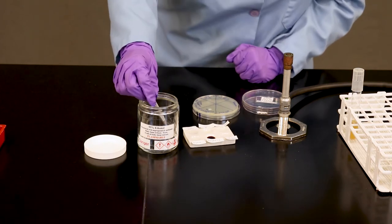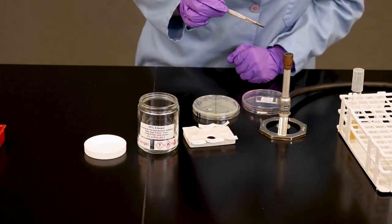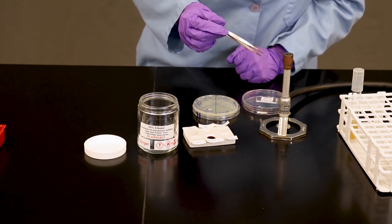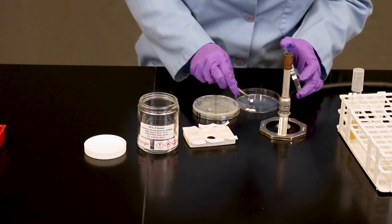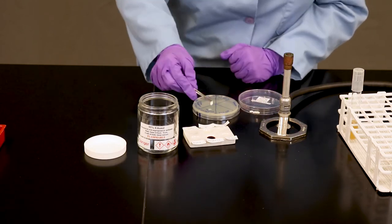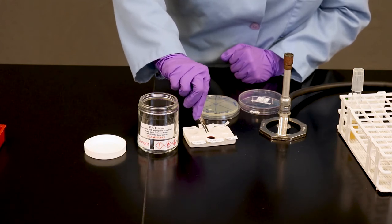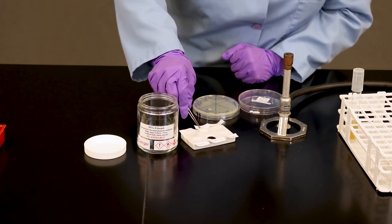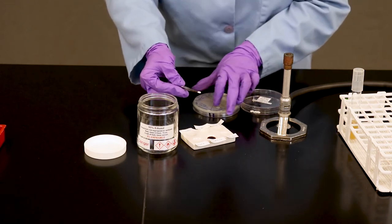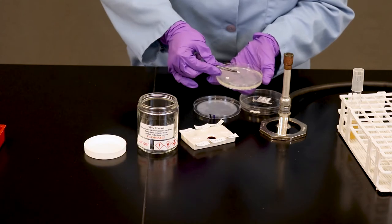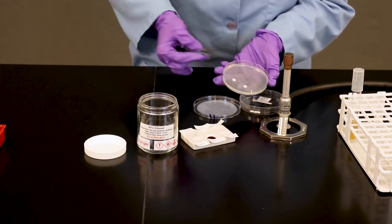You're going to repeat. Dip into the alcohol. Let it burn off the forceps. Get rid of any excess. Place your finger down on where you want to put it. Press gently into the agar.